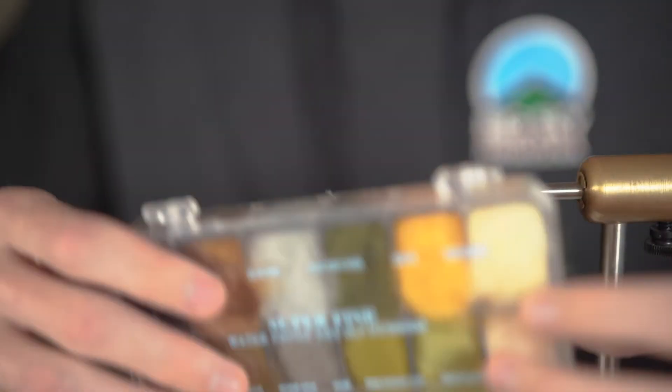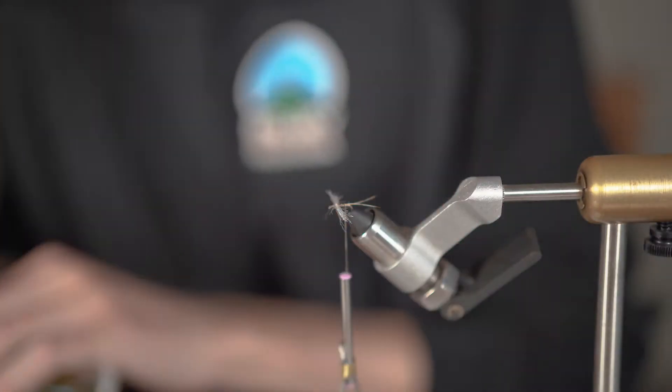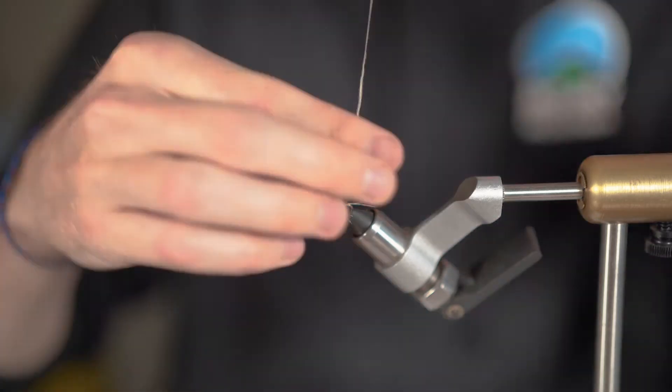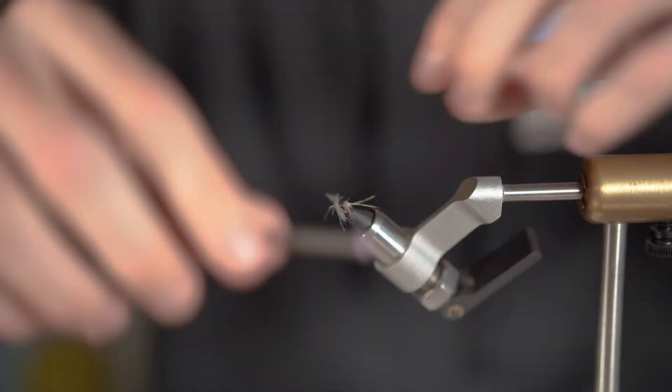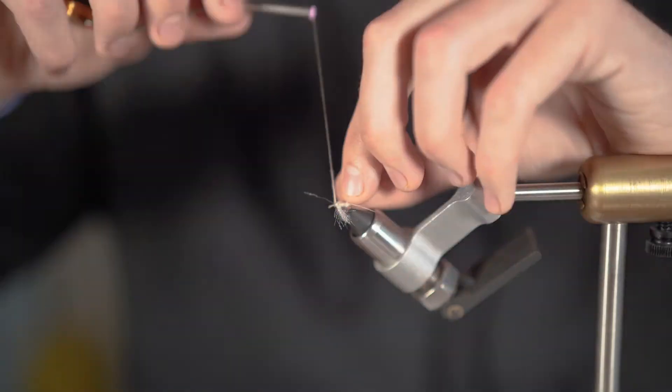Grab a small pinch of that PMD colored dry fly dubbing and twist that onto the thread. One last thing to do to finish this, wrap up to the eye of the hook, carefully going around the poly yarn wings and whip finish a few times.